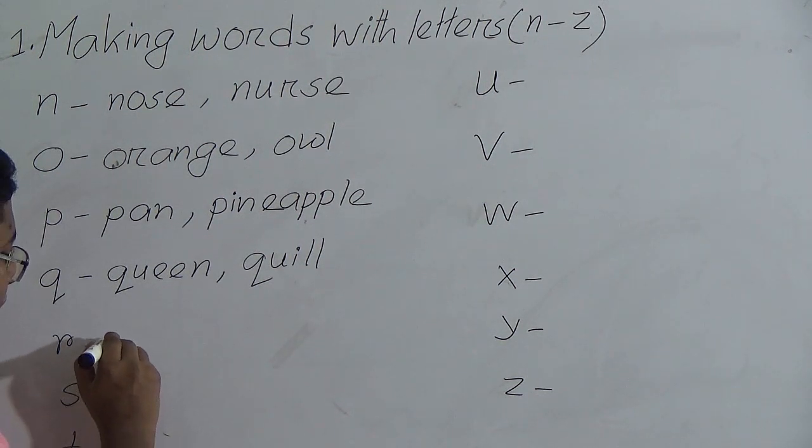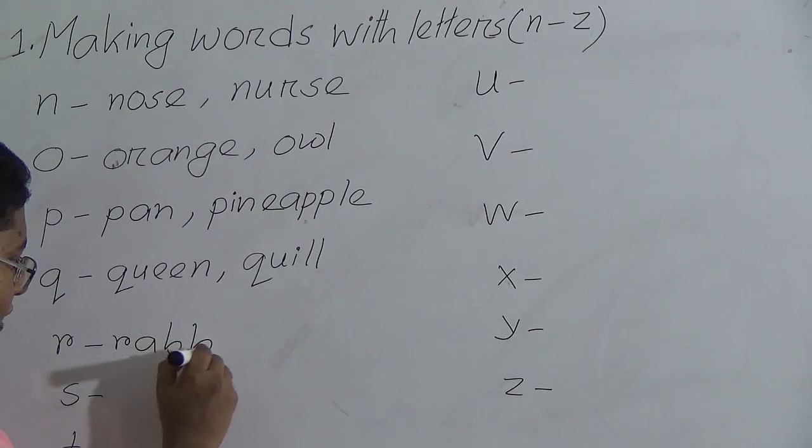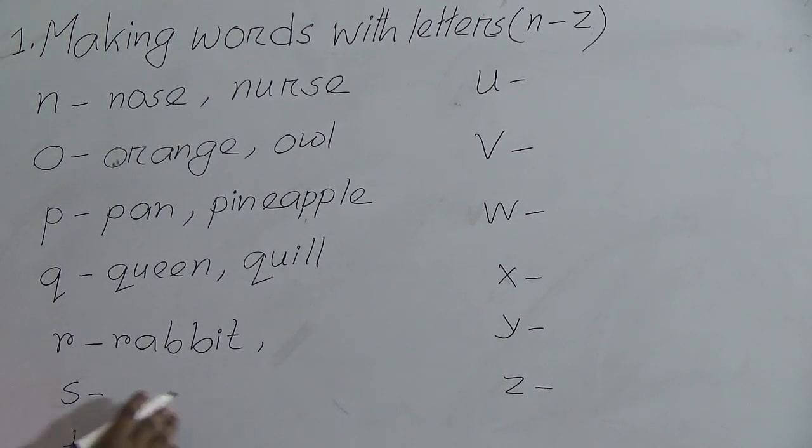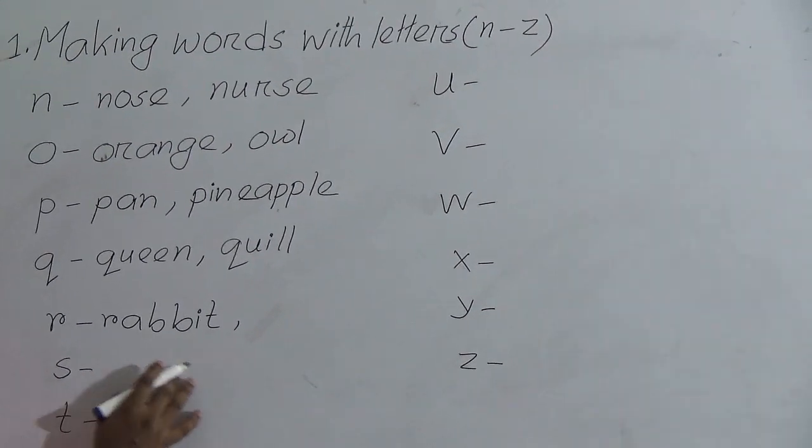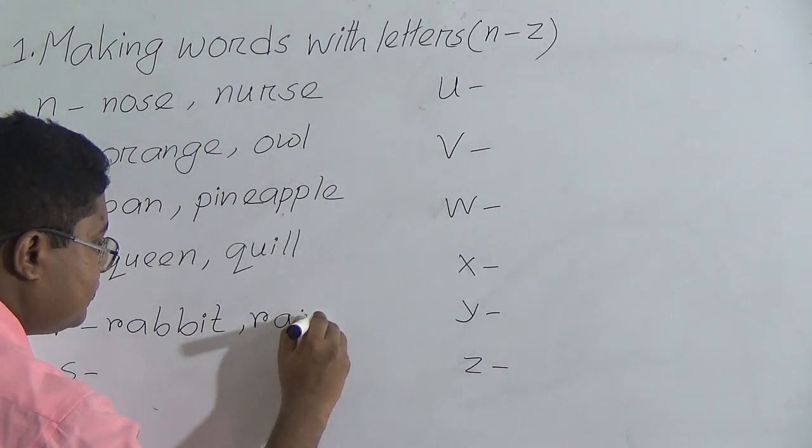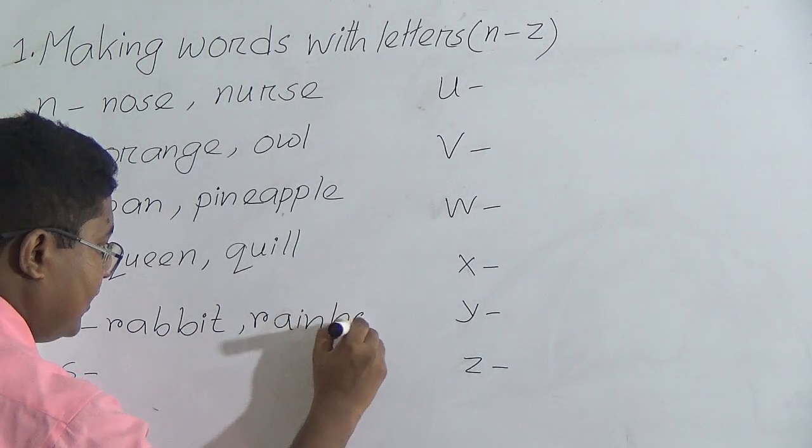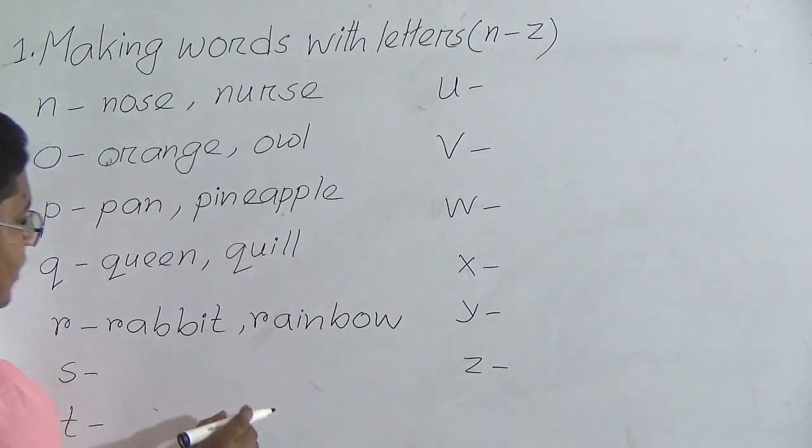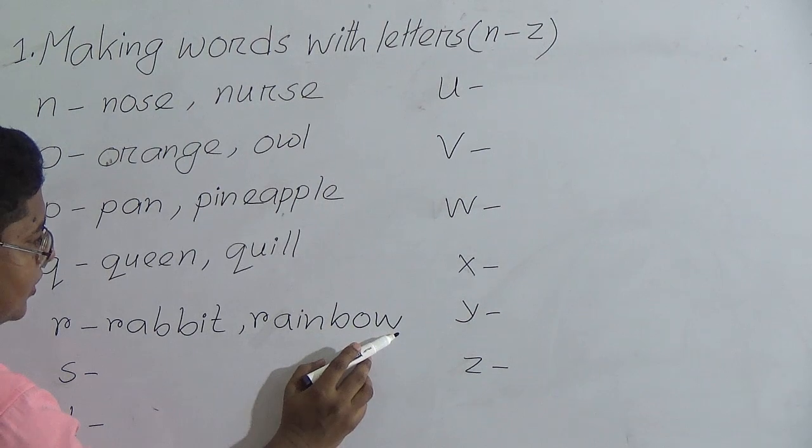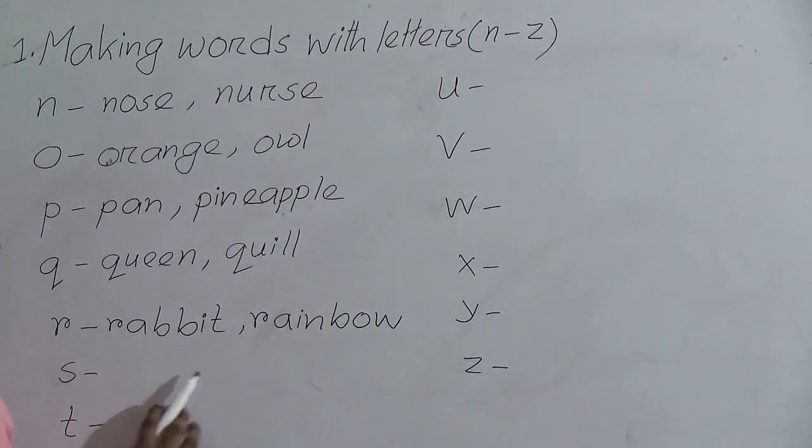R. R for rabbit, R-A-B-B-I-T, rabbit. And then R for rainbow, R-A-I-N-B-O-W. So, R-A-I-N, rain, B-O-W, rainbow. R for rabbit, R for rainbow.